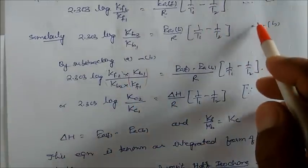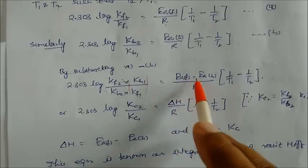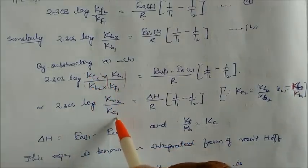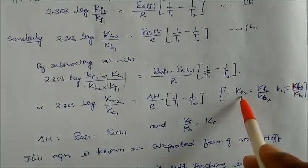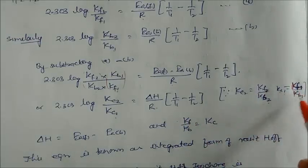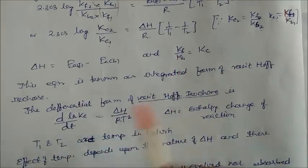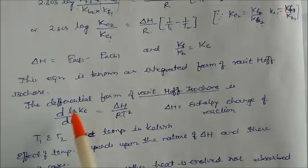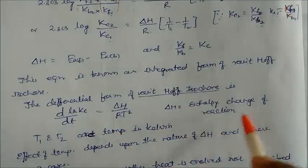Subtracting the two Arrhenius expressions gives: 2.303 log(Kf2/Kb2 × Kb1/Kf1) = (Eaf − Eab)/R × (1/T1 − 1/T2). Since Kf/Kb = Kc, this becomes 2.303 log(Kc2/Kc1) = ΔH/R × (1/T1 − 1/T2). This is the integrated form of the Van't Hoff isochore equation. The differential form is d(ln Kc)/dT = ΔH/RT², where ΔH is the enthalpy change and T is in Kelvin.